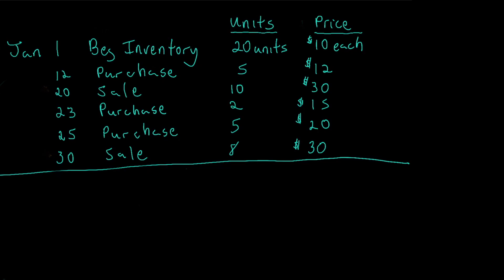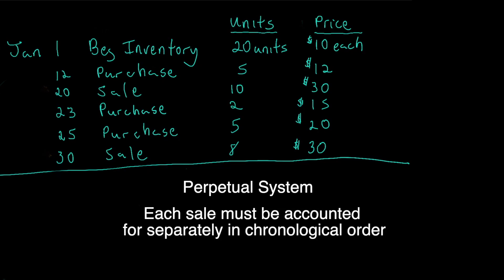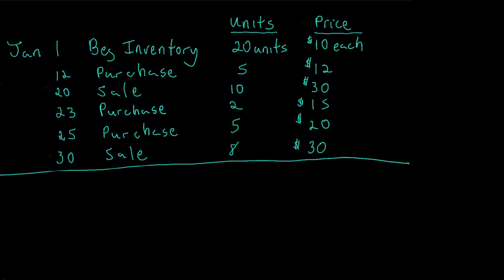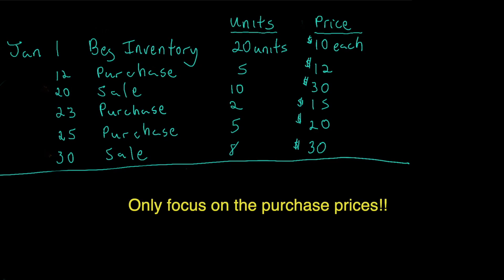We are getting ready to rock and roll with the LIFO method to calculate cost of goods sold and cost of ending inventory. A few things before we get started: one, we are practicing the perpetual system, which dictates that we adjust our inventory after every sale or purchase on the books. Therefore we have to break it down from a sale-to-sale basis in chronological fashion — accounting for the first sale on the list, then the next. Two, this list has both sales and purchases, and since we're only concerned with calculating cost of goods sold and ending inventory — how much it cost the company to make the purchase — we will not be concerned with the sales price.